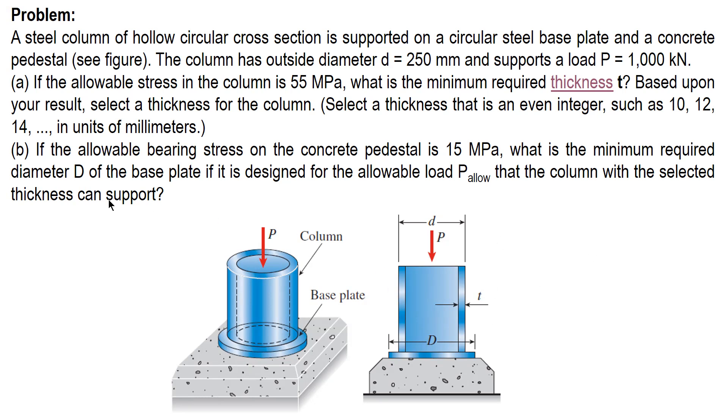So for letter B, after choosing the minimum thickness and even integer, we compute for the allowable P based on the chosen thickness and then use that value to solve for D given an allowable bearing stress. So first, let's solve for the minimum required thickness.